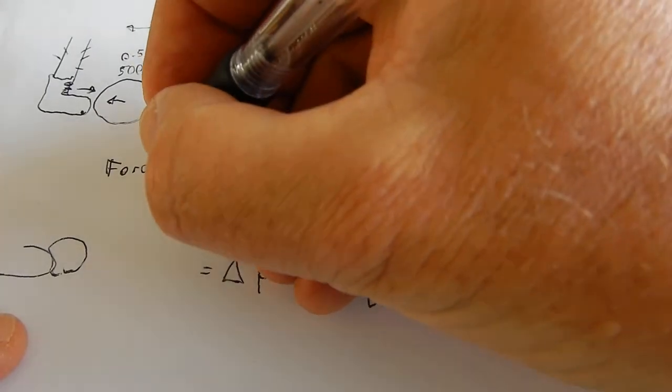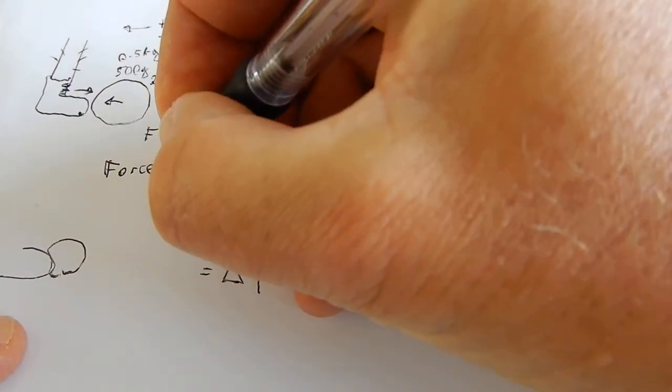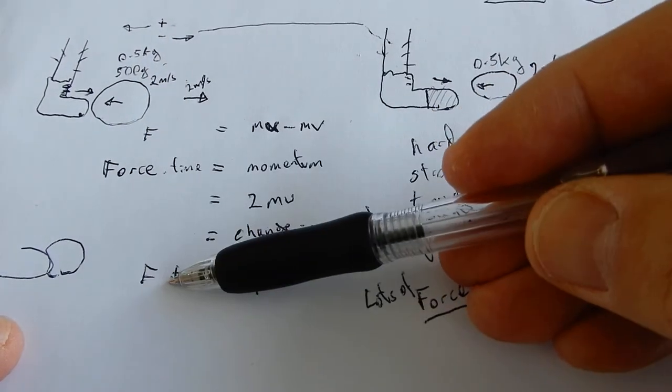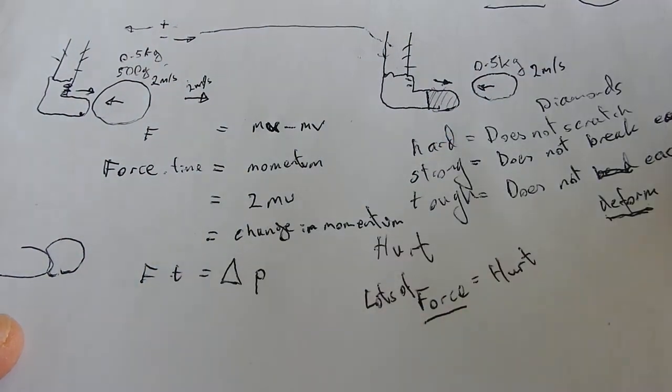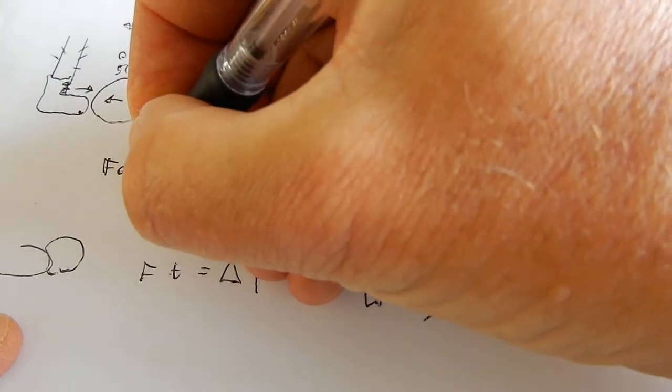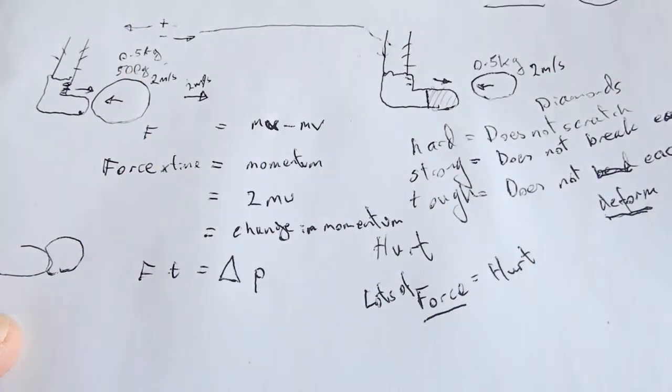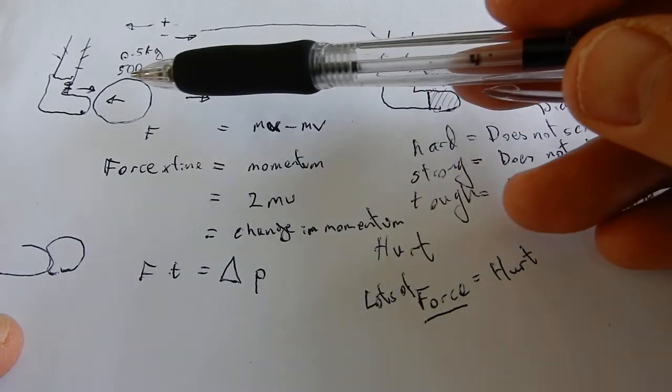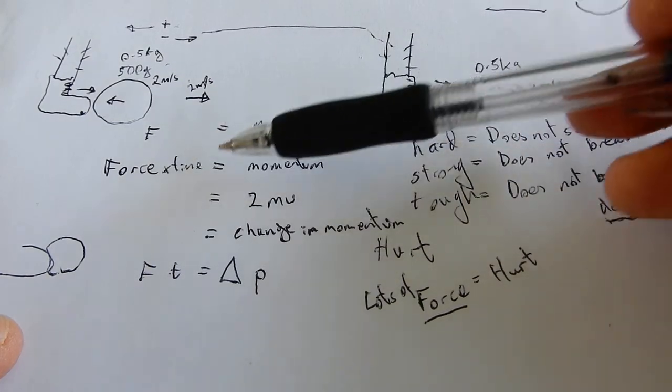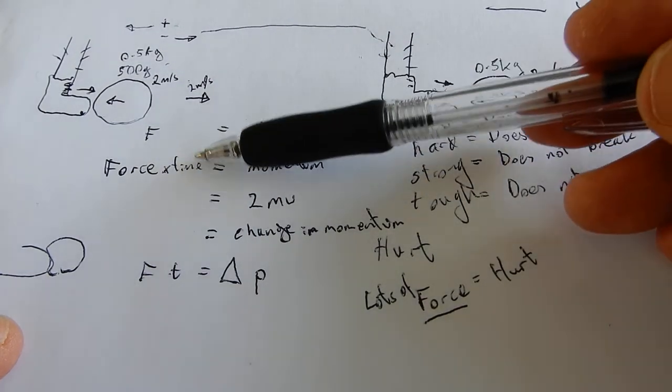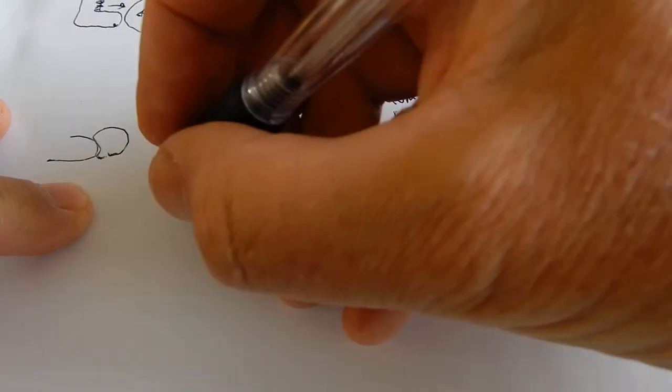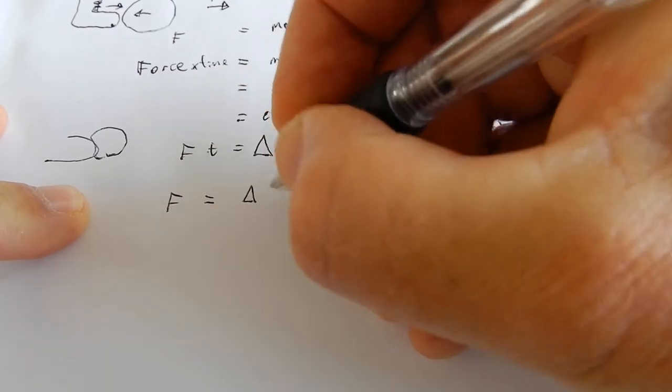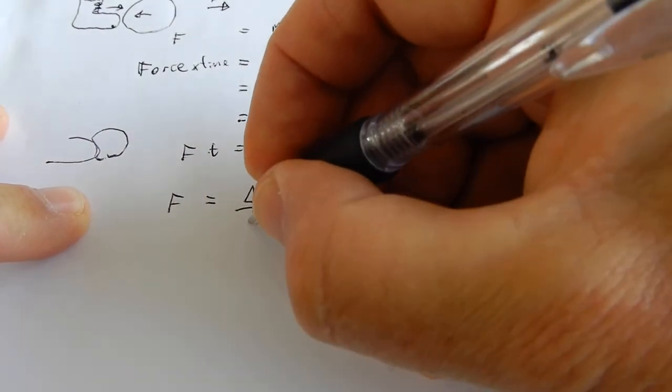What symbol are we going to use for time? Hopefully everyone's going to be okay with T. Is this going to be a plus, a times, a divide? I don't know. More force. More force means more hurt. Less time means more hurt. So because let's rearrange this. Force equals change in momentum over time.